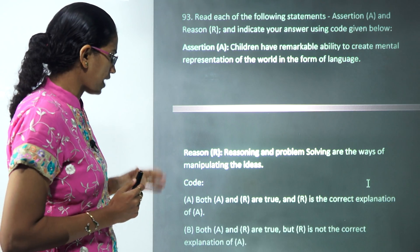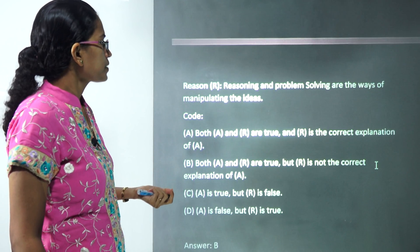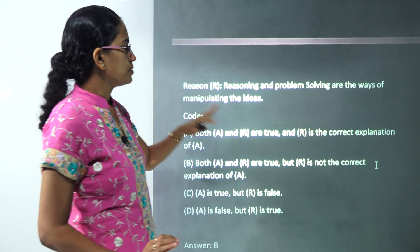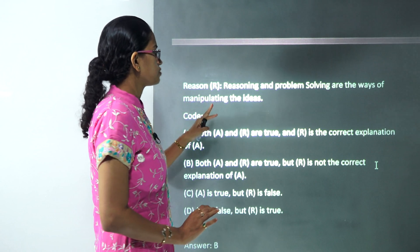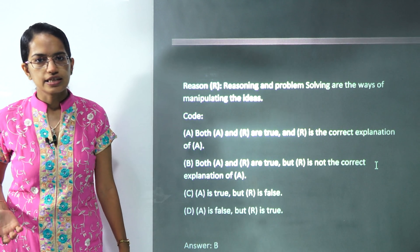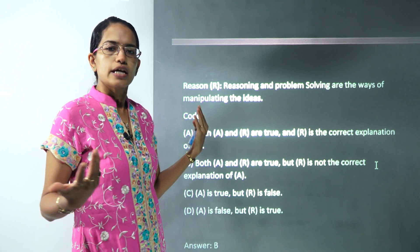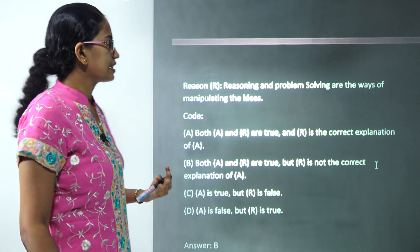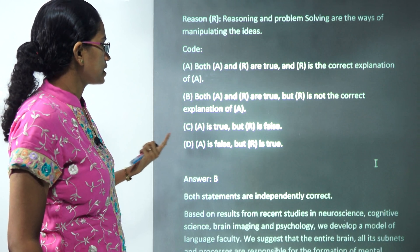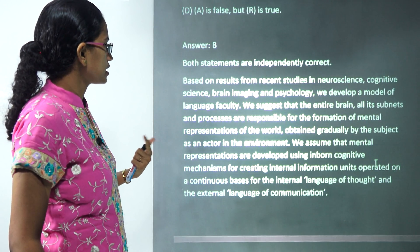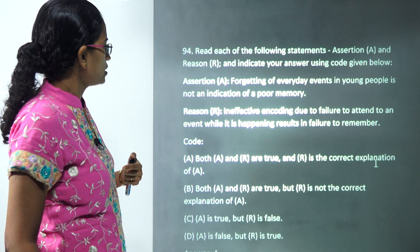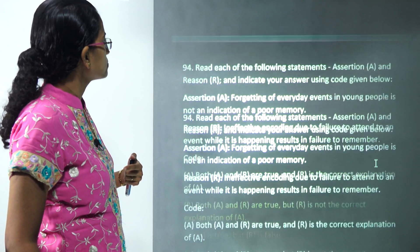The next assertion-reason question states that children have a remarkable ability to create mental representations of the world in the form of language — that's correct. The reason states that problem solving and language are ways of manipulating ideas — that's also correct. Both statements are independently correct, so B is the correct answer.